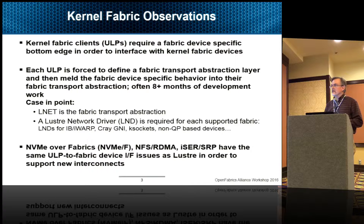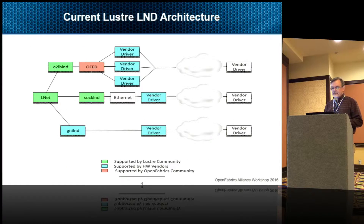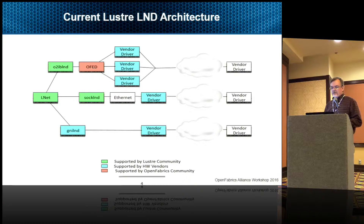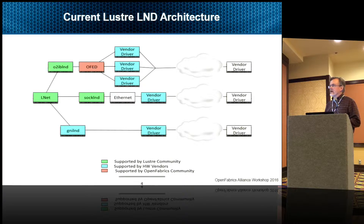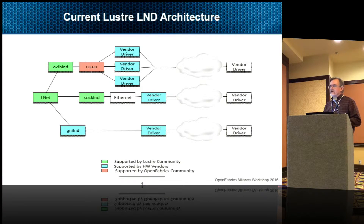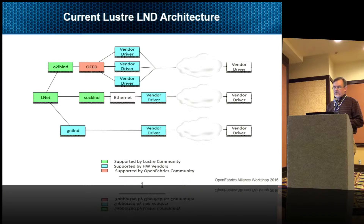If you need to add a new interface, then how do you manage that? Going back to the Lustre example, this is what it looks like today. You have the O2IB LND, which sits on top of OFED and can support iWarp, RoCE, and InfiniBand. Sockets is TCP over Ethernet. And then the GNI is for Cray Gemini and Aries networks.